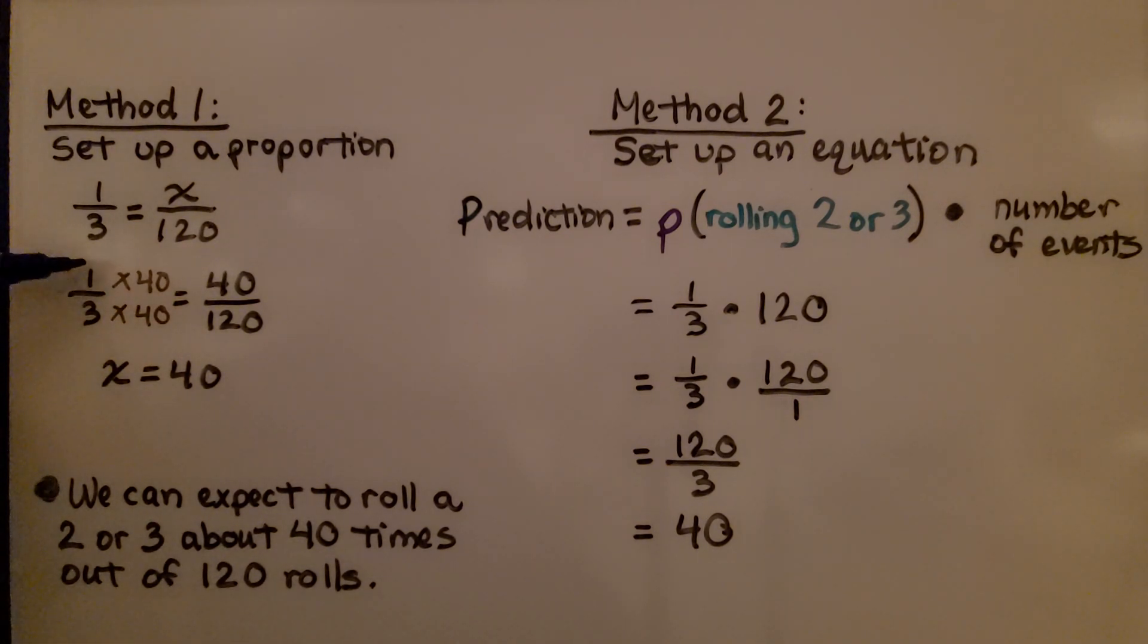We multiply the numerator by the same amount. We get 40. We know x is equal to 40.